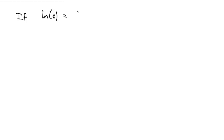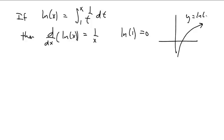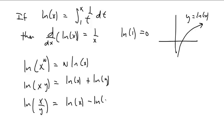Quick recap. If we define the natural log of x to be the integral from 1 to x of 1/t dt, then: the derivative of ln(x) is 1/x; ln(1) is 0; the graph looks like this; ln(x^n) = n·ln(x); ln(xy) = ln(x) + ln(y).